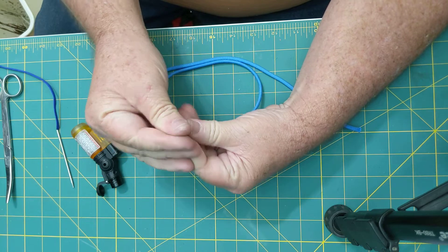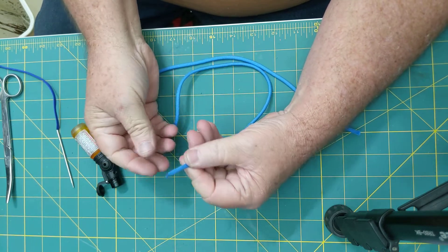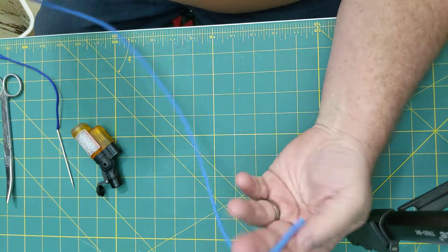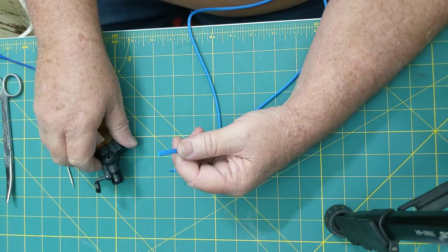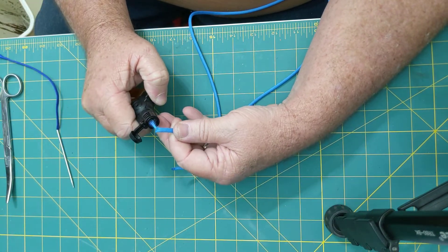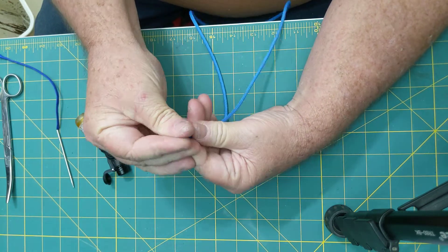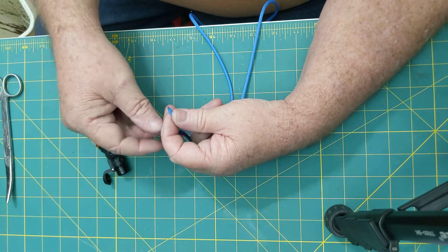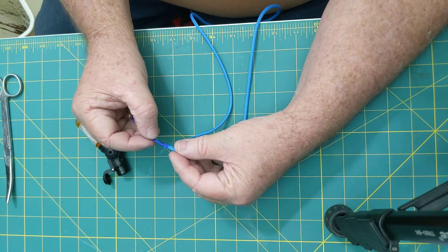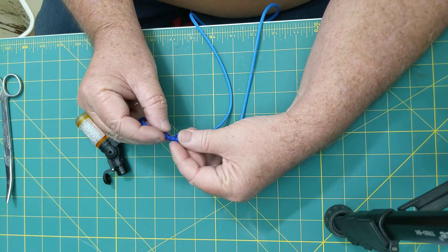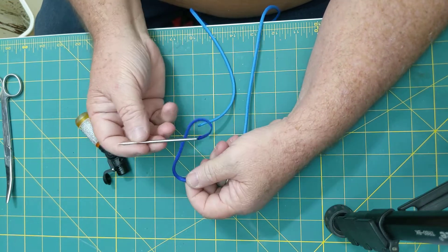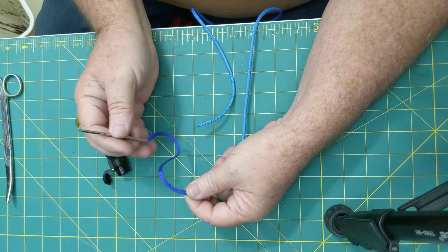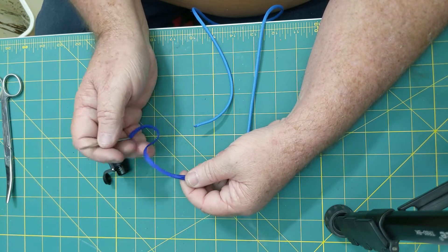This end you also melt and roll into a point. Take and put this into a three millimeter paracord needle, stainless steel, and this is whip maker cord.